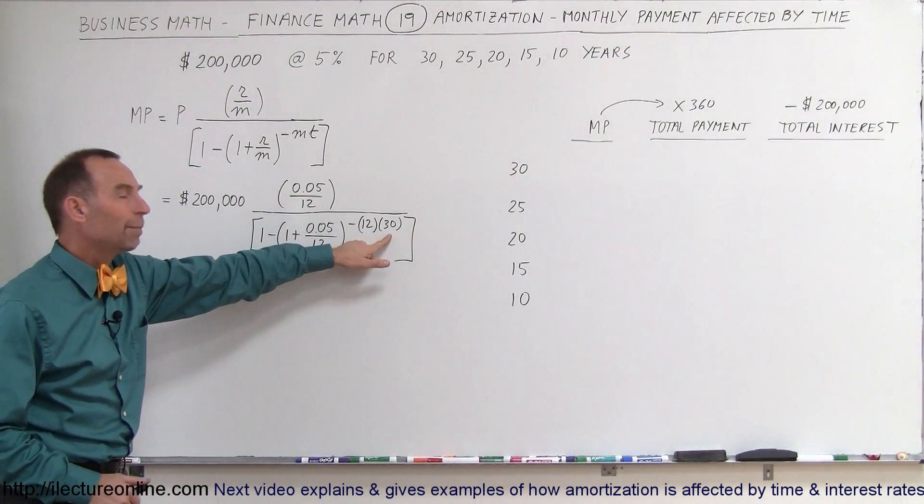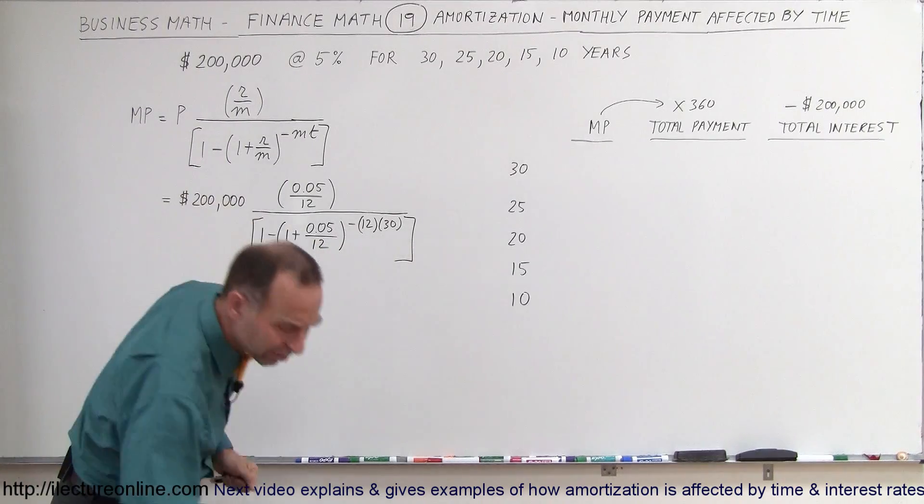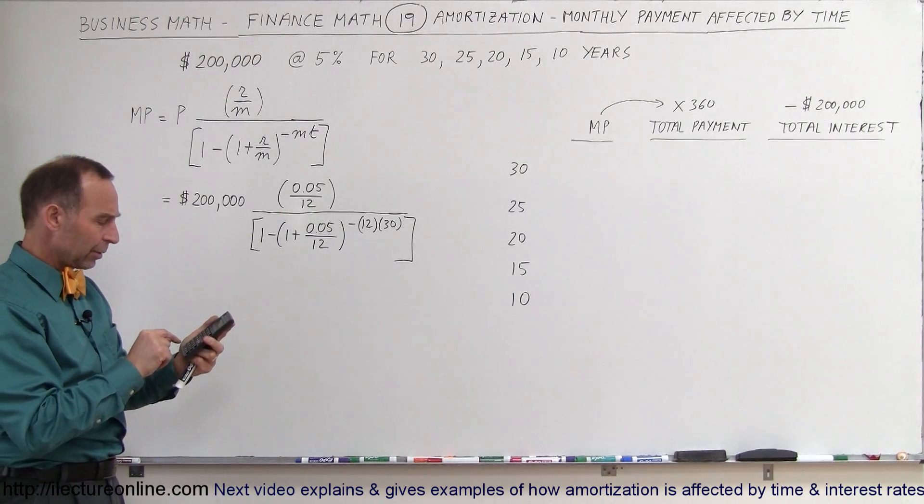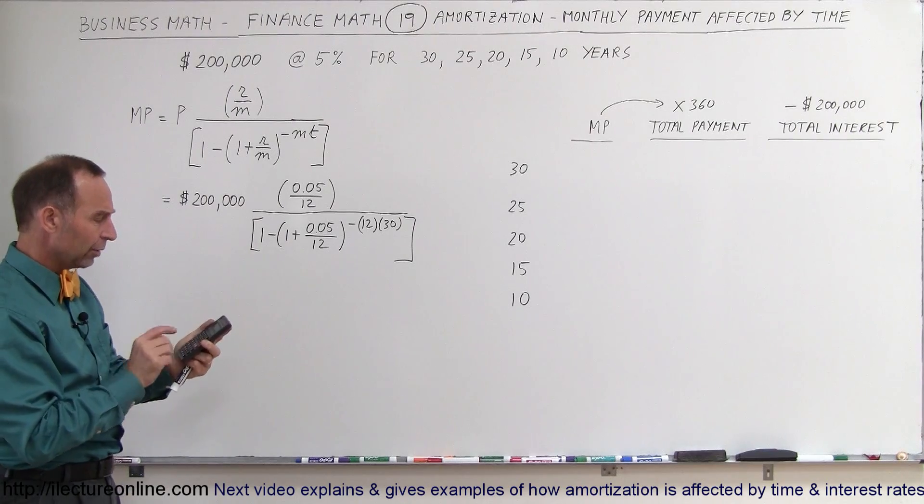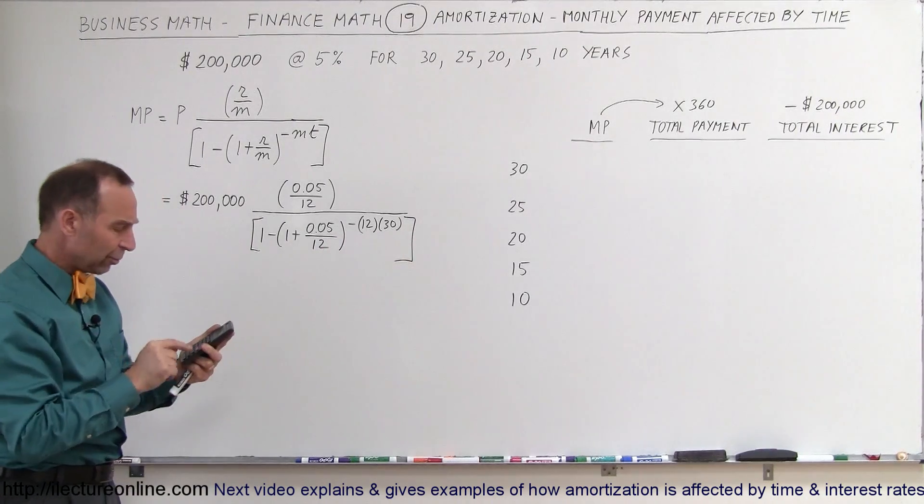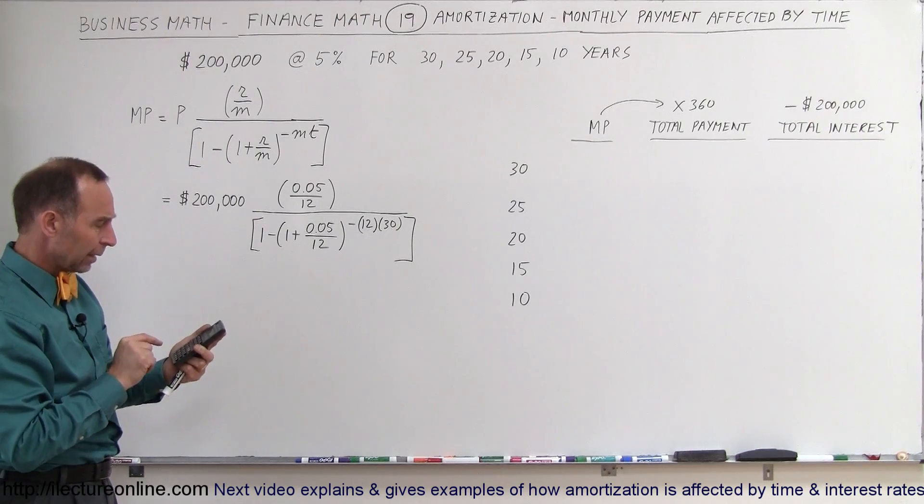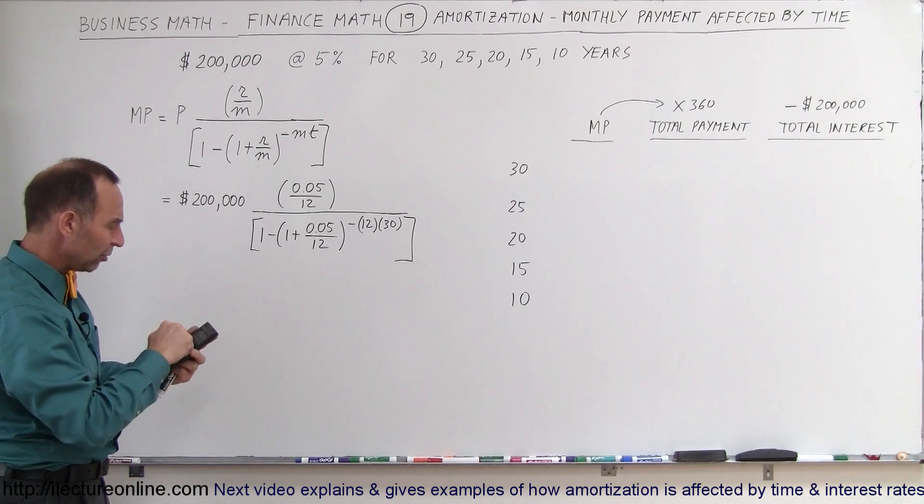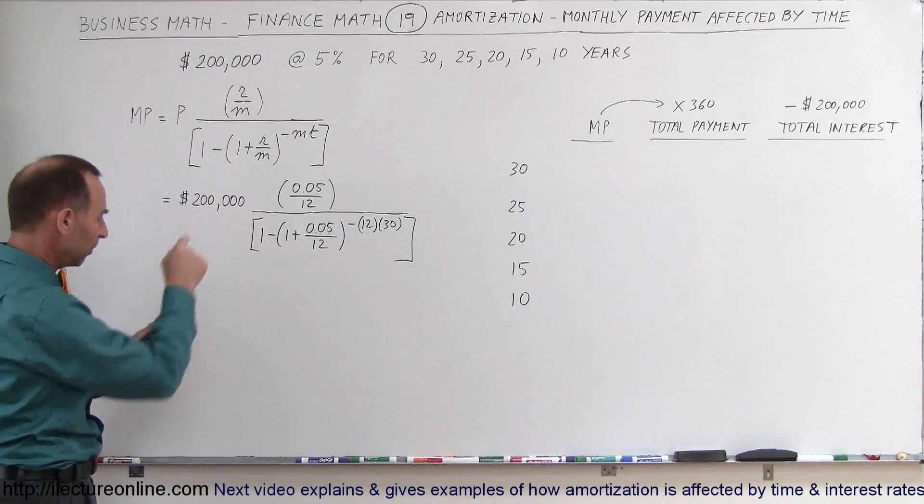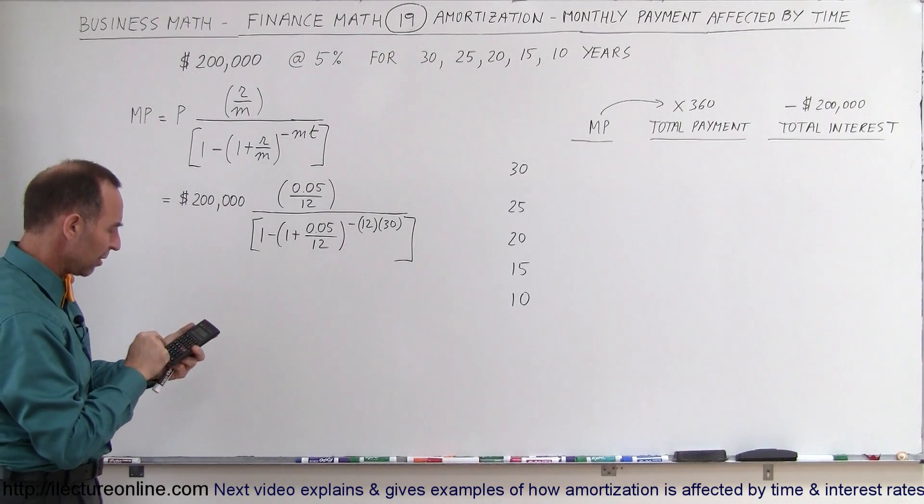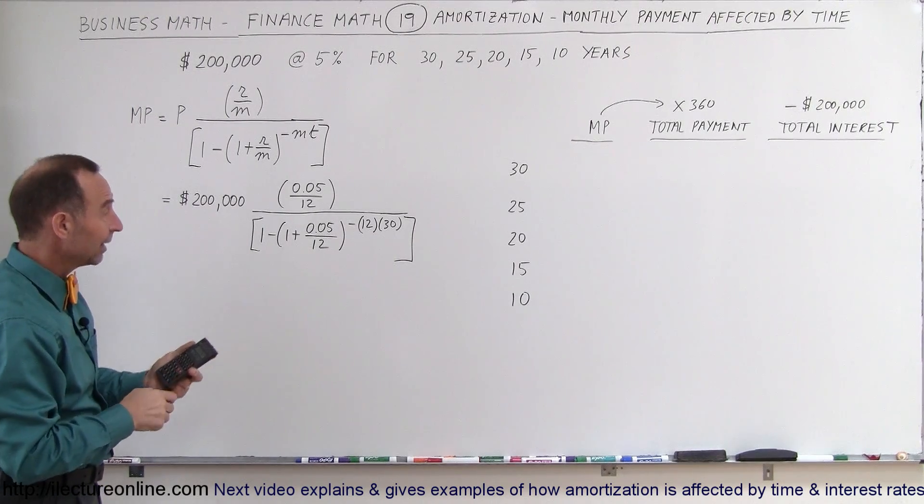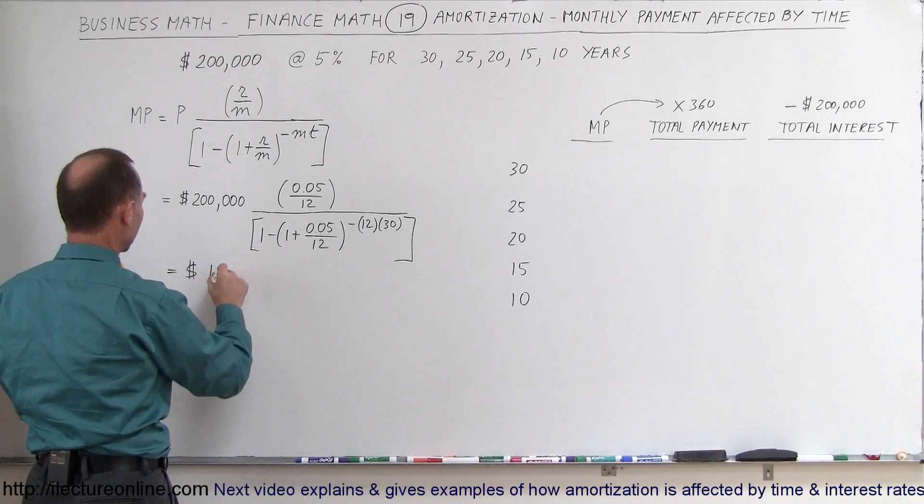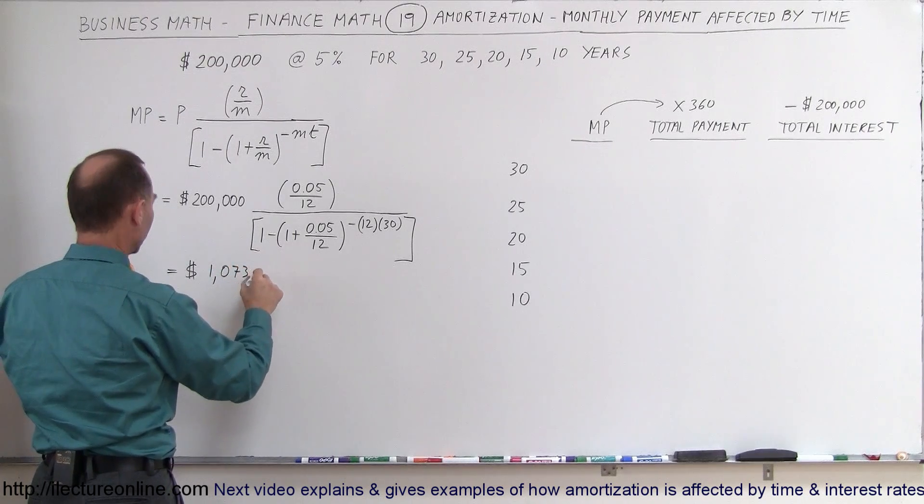12 payments per year, total number of payments, 360, of course, for a 30-year period. Let's see what the monthly payment would be in this case. Starting from down here, we go 0.05 divided by 12 plus 1, so we have this quantity right here, raised to the minus 360th power, then we subtract that from 1, we raise it to the numerator by pushing the 1 over x button, multiply times 0.05, divide by 12, and multiply times 200,000. In this case, our monthly payment would be $1,073.64.